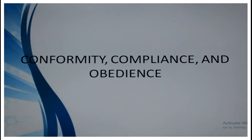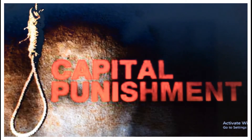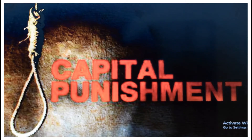Next come three terms: conformity, compliance, and obedience. Before moving to these, there is a small topic on page 138 about why group polarization occurs. Taking the example of capital punishment — whether it should exist or not — suppose you favor capital punishment for very heinous, intolerable crimes. Like-minded people come together, and their views become stronger, leading to a firm conviction. There are three reasons for this.